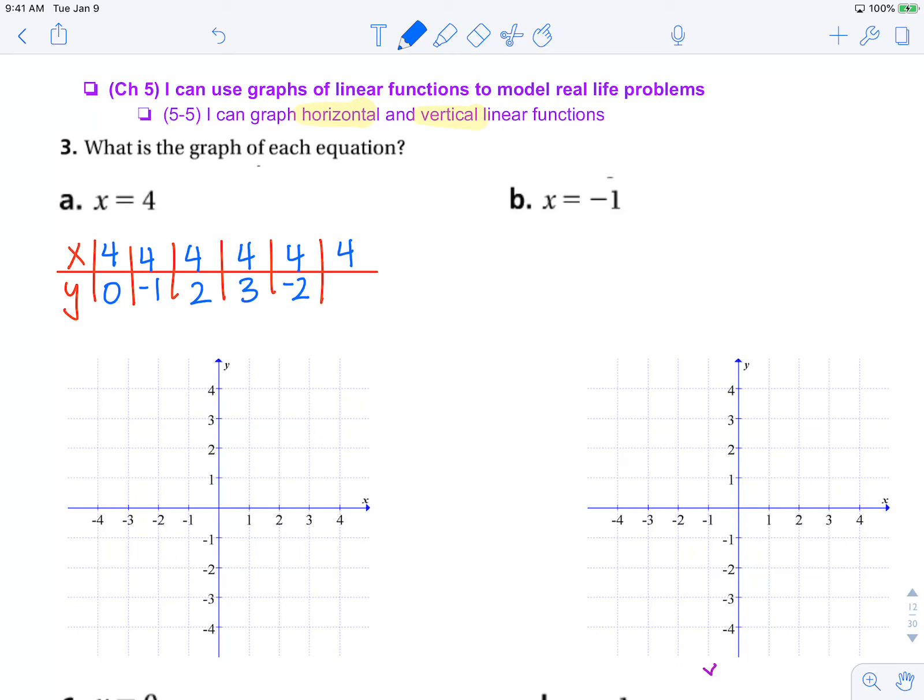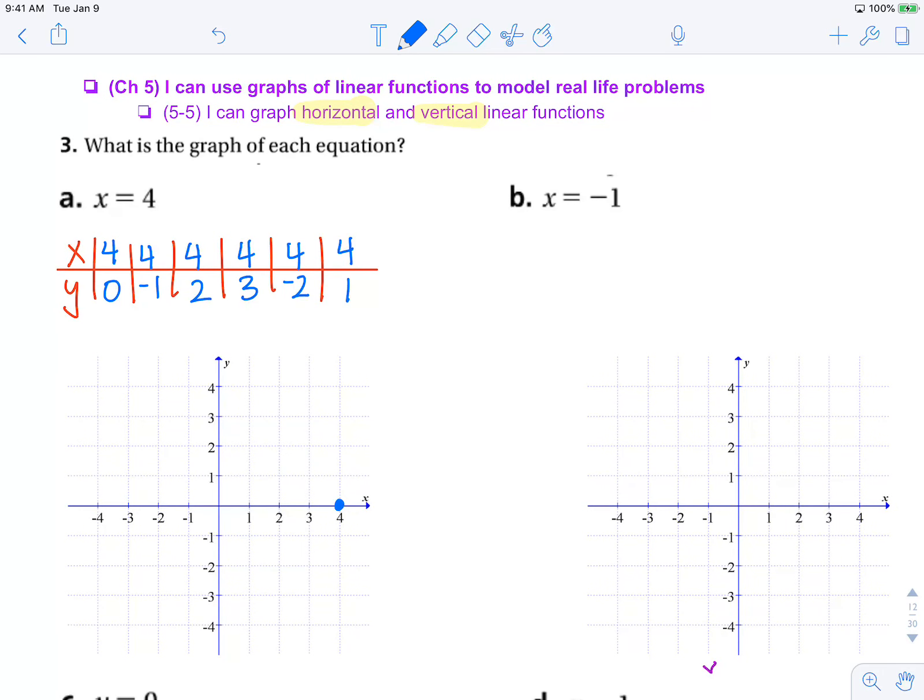Let's say negative 2 and 1. If we plot these six points, we should get an idea of what the line x equals 4 looks like. So 4,0; 4,negative 1; 4,2; 4,3; 4,negative 2; 4,1.